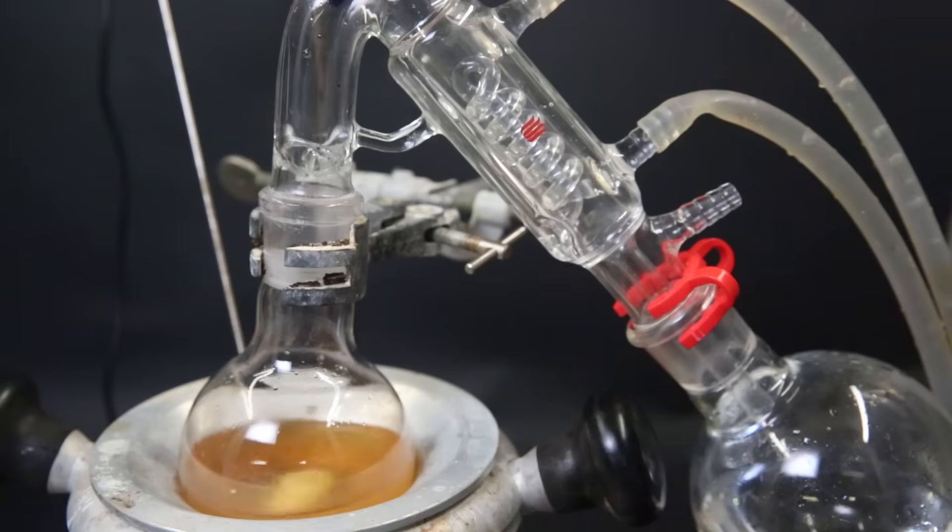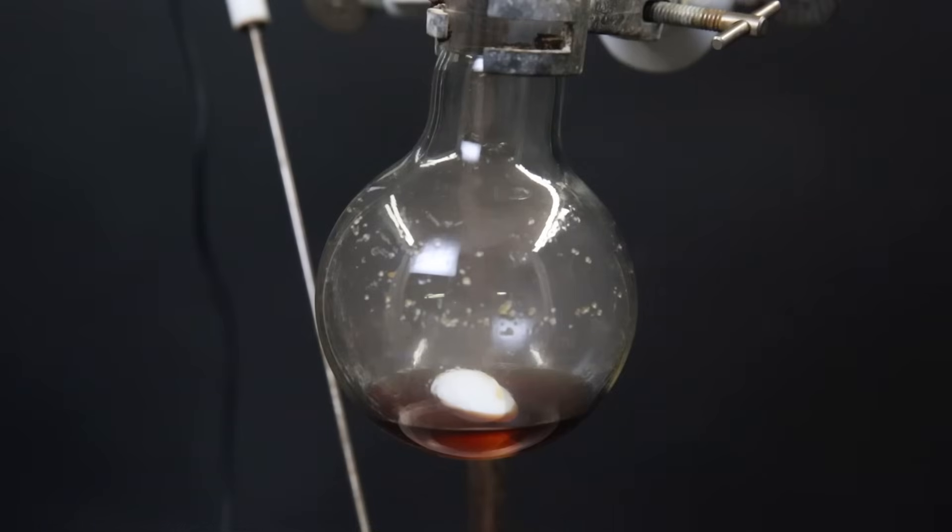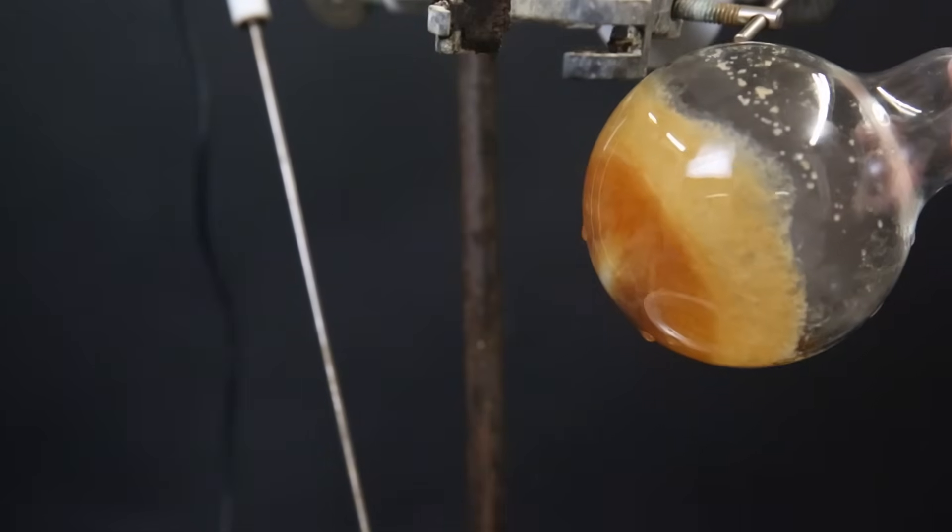To remove the hexanes, I will simply distill it off with a regular short path distillation. When all of the hexanes is gone, a red liquid remains, which crystallizes fully upon cooling down.